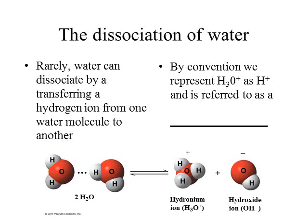Water has a covalent bond between the oxygen and the hydrogen, and it's a polar covalent bond, which causes water to be a polar molecule. But water, to a very small extent, can dissociate. And when it does this, it transfers a hydrogen ion from one water molecule to another water molecule.